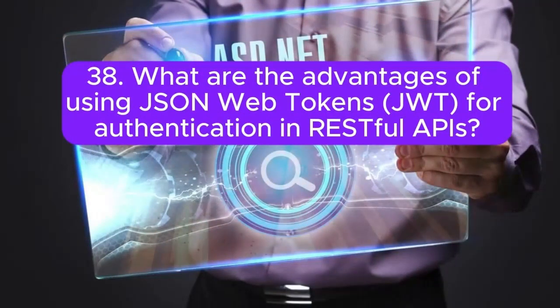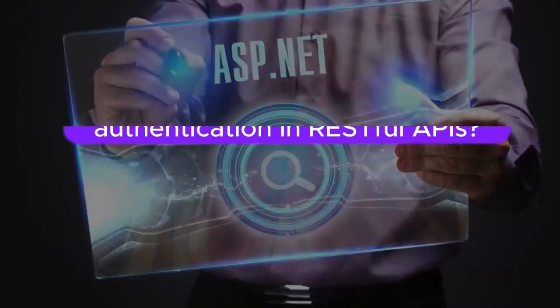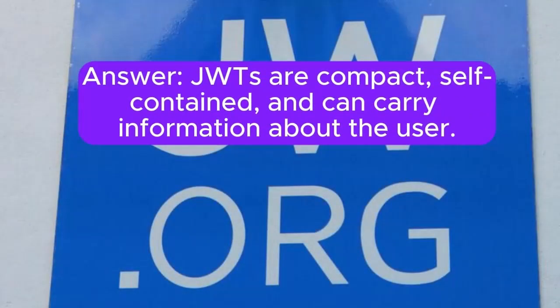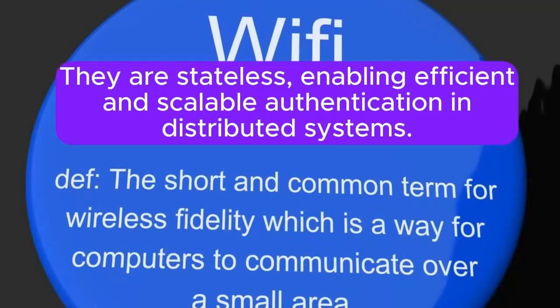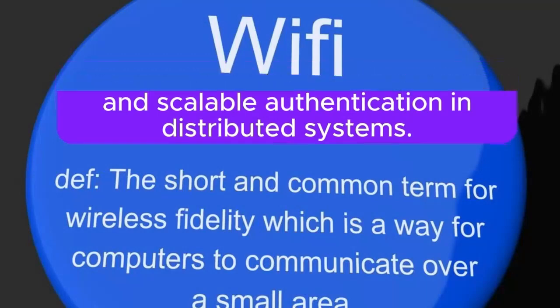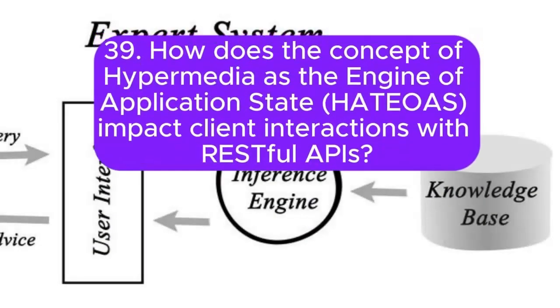Question 38: What are the advantages of using JSON Web Tokens (JWT) for authentication in RESTful APIs? JWTs are compact, self-contained, and can carry information about the user. They are stateless, enabling efficient and scalable authentication in distributed systems.